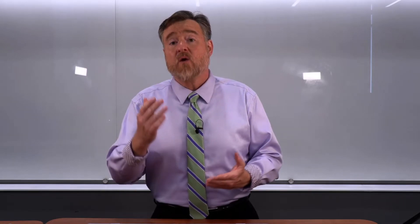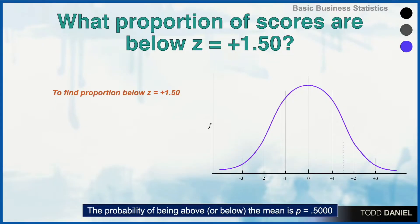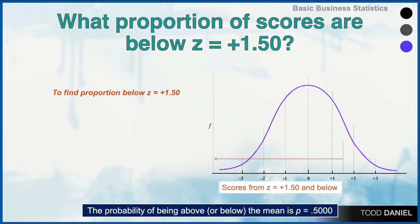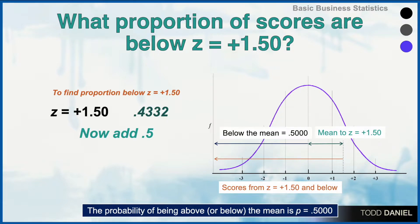We can combine this information with what we know about half of scores being above or below the mean. For instance, if we wanted to find what proportion of scores are below a z of positive 1.50, we begin by identifying that z of 1.50 is above the mean because the z-score is positive. Next, we find the proportion of scores between the mean and 1.50, which we've already identified as 0.4332.